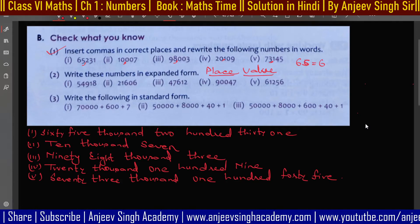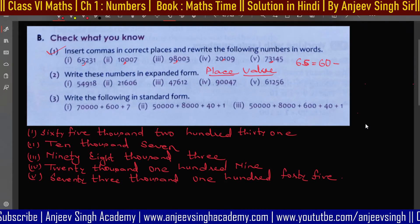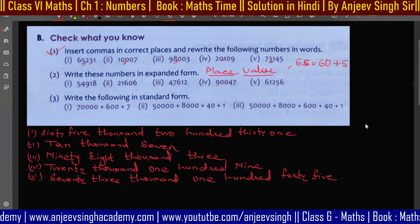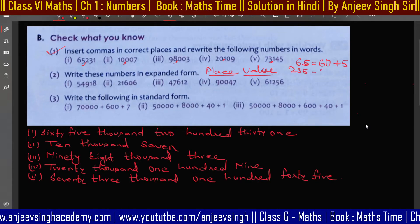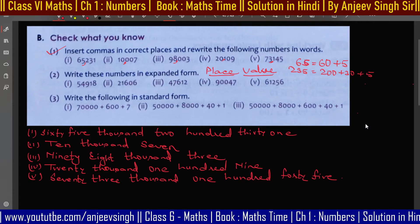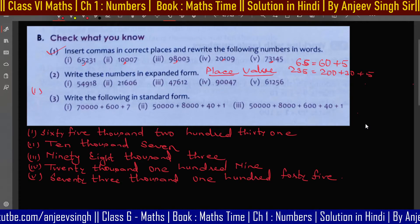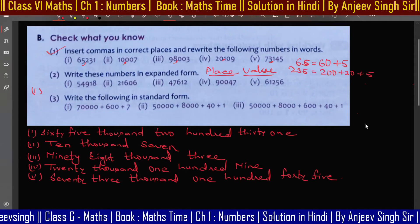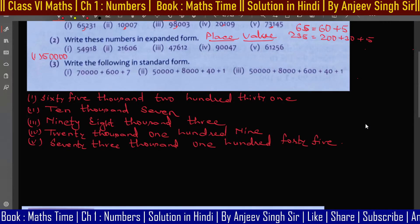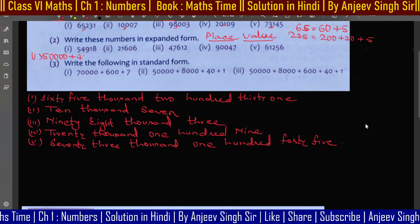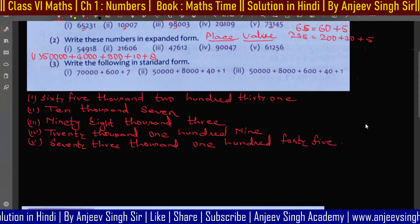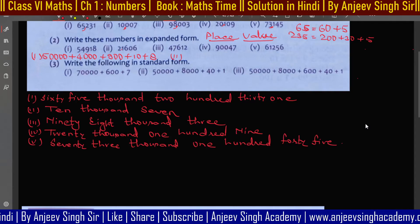When writing expanded form, each digit is written according to its place value position. For example, 232: the place value of 2 is 200, 3 is 30, and 5 is 5. So for question number 1, the expanded form would be: 50,000 + 4,000 + 900 + 10 + 8.